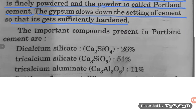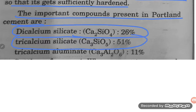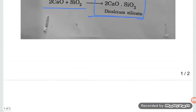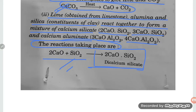The important compounds present in Portland cement are: dicalcium silicate (Ca₂SiO₄) — 26%; tricalcium silicate (Ca₃SiO₅) — 51%; and tricalcium aluminate (Ca₃Al₂O₆) — 11%.